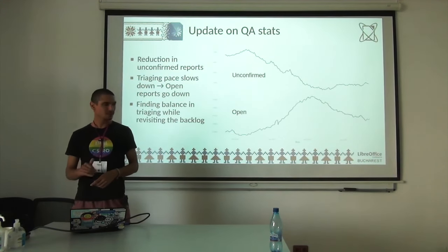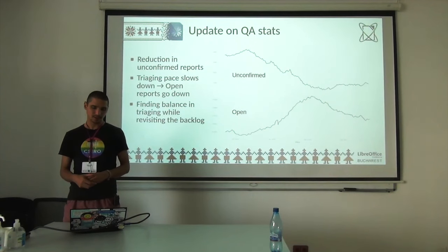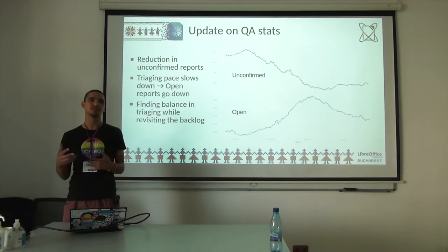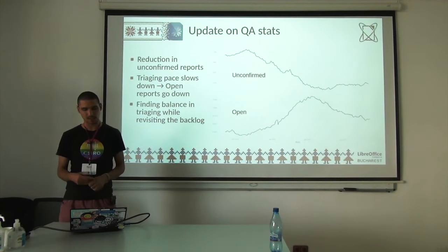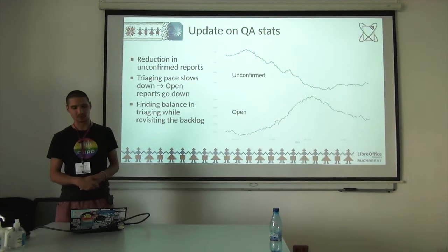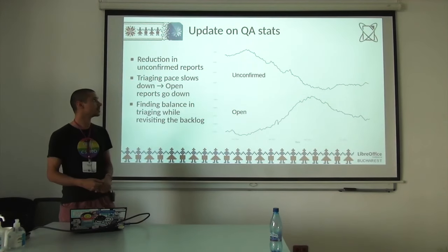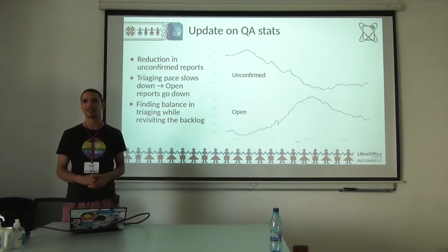In recent months and since roughly the end of last year — the end of 2022 — we had a good reduction in unconfirmed reports, or reports that usually haven't been treated, haven't been processed or triaged by the QA team. Over the last few months we've also seen that this triaging pace slows down significantly, and we're getting to a point where it's a bit more stable around 1100–1200 unconfirmed reports, which is quite significant still. But I have to remember that we started over 1800, which is largely the impact of the uptake of LibreOffice in COVID times.